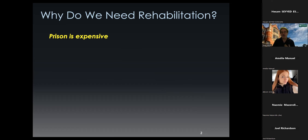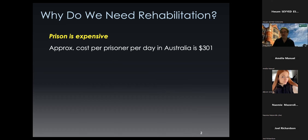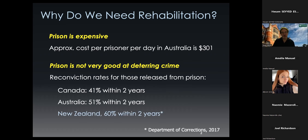So why do we need rehabilitation? Why do we need programs for people who commit offences? Well, prison is expensive. I've got some recent figures from Australia, and it's $300 a day — it's probably about $200 plus Canadian, probably even more now. And prison really doesn't do a great job of stopping people from committing further crimes. It might prevent people through the threat of punishment, but once someone has been imprisoned, the reoffending rates are fairly high, as indicated in these figures.